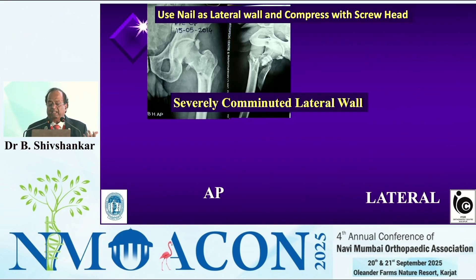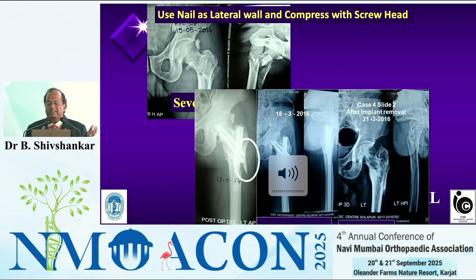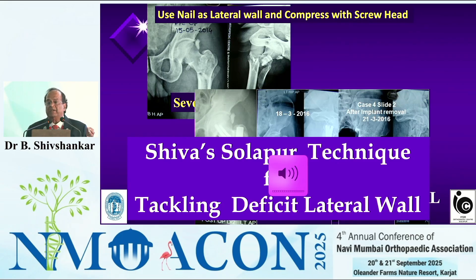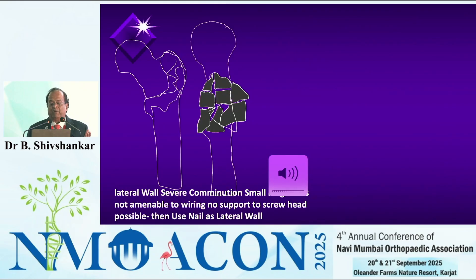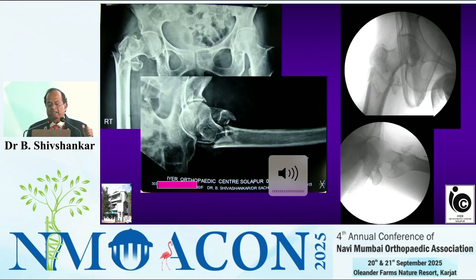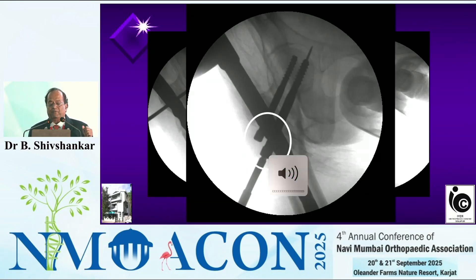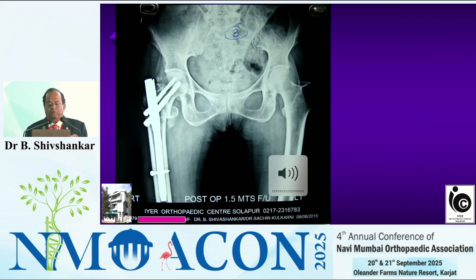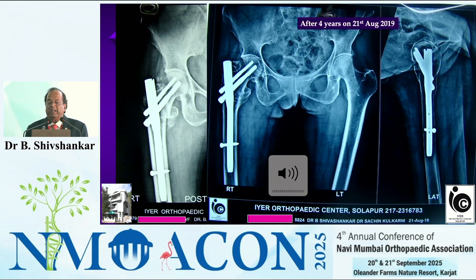In a badly comminuted lateral wall, the nail is acting as the lateral wall — the fracture unites and I remove the implant. I call this the Solapur technique of tackling the deficient lateral wall using the nail itself as a lateral wall. A badly comminuted, very osteoporotic fracture — operated in 2014 — you can see my screw heads are resting against the nail. At one and a half months and four and a half years later in 2019, the screw heads are still against the nail and the fracture heals without any problem.